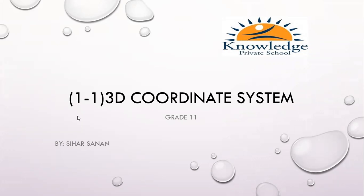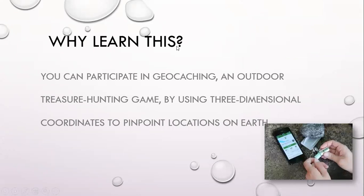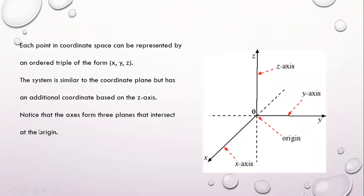I'm going to start with the first subject: the 3D coordinate system. 3D means three dimensions. Why is it important? You can participate in geocaching, an outdoor treasure hunting game, by using three-dimensional coordinates to pinpoint locations on Earth. We're talking about GPS — a Global Positioning System — which gives us locations using three coordinates: latitude, longitude, and elevation.